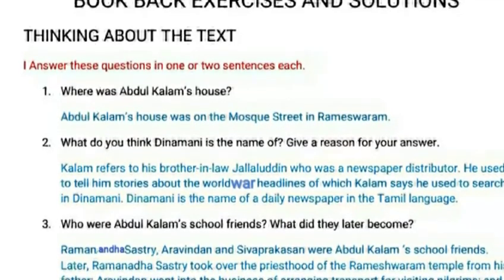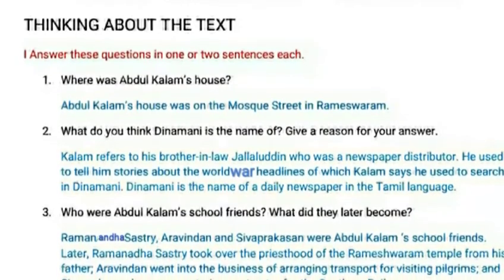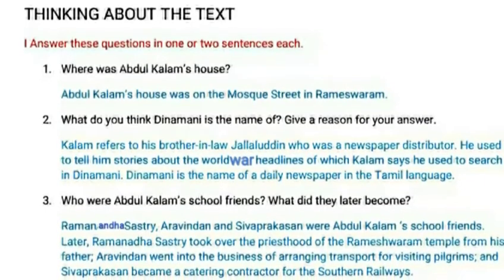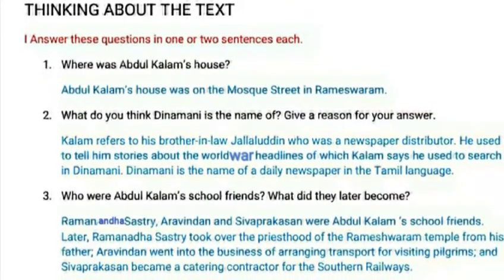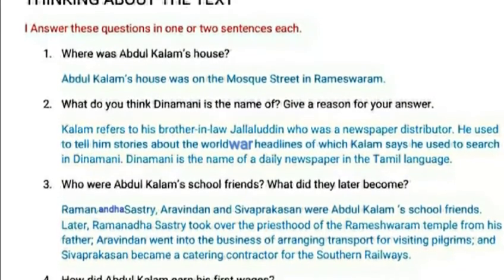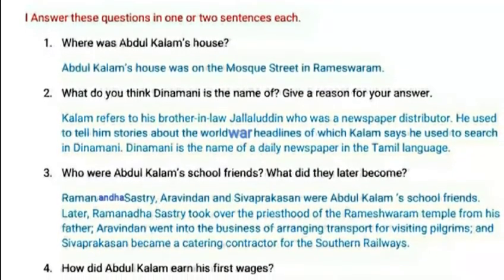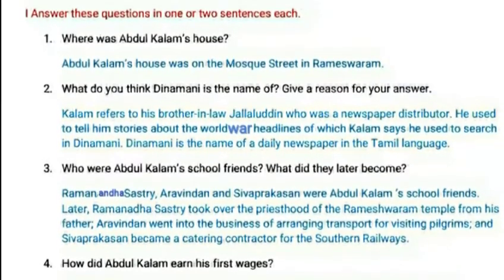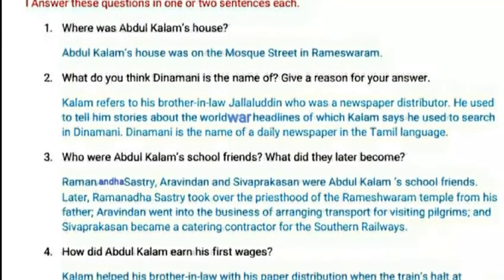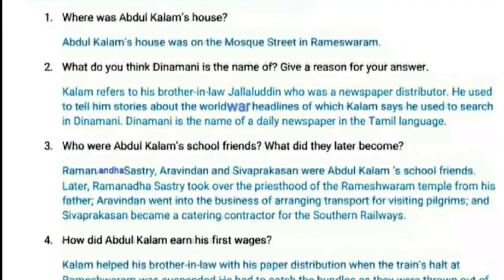Question 3: Who were Abdul Kalam's school friends? What did they later become? Ramananda Sastri, Aravindan, and Siva Prakasan were Abdul Kalam's school friends. Later, Ramananda Sastri took over the priesthood of the Rameshwaram temple from his father. Aravindan went into the business of arranging transport for visiting pilgrims, and Siva Prakasan became a catering contractor for the Southern Railways.